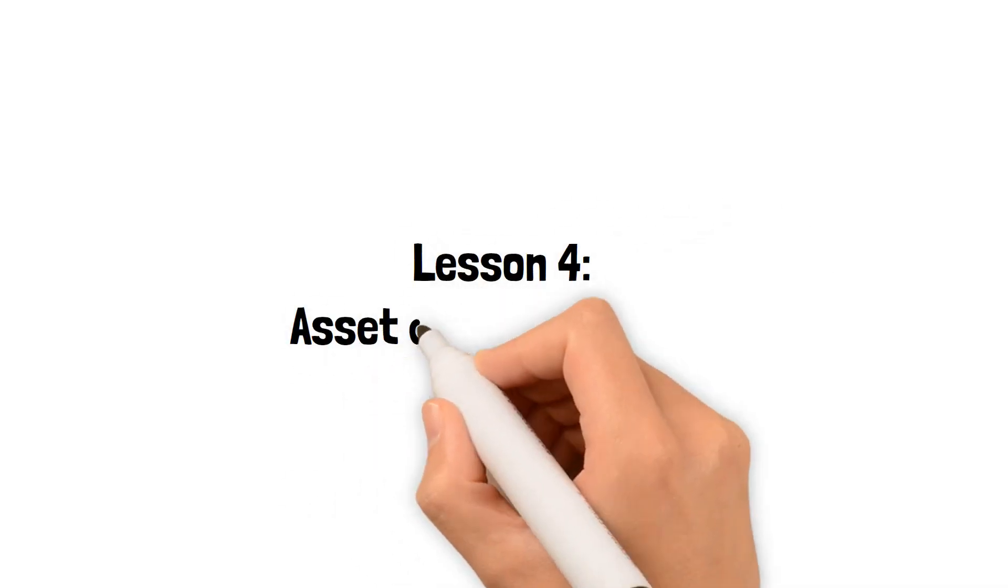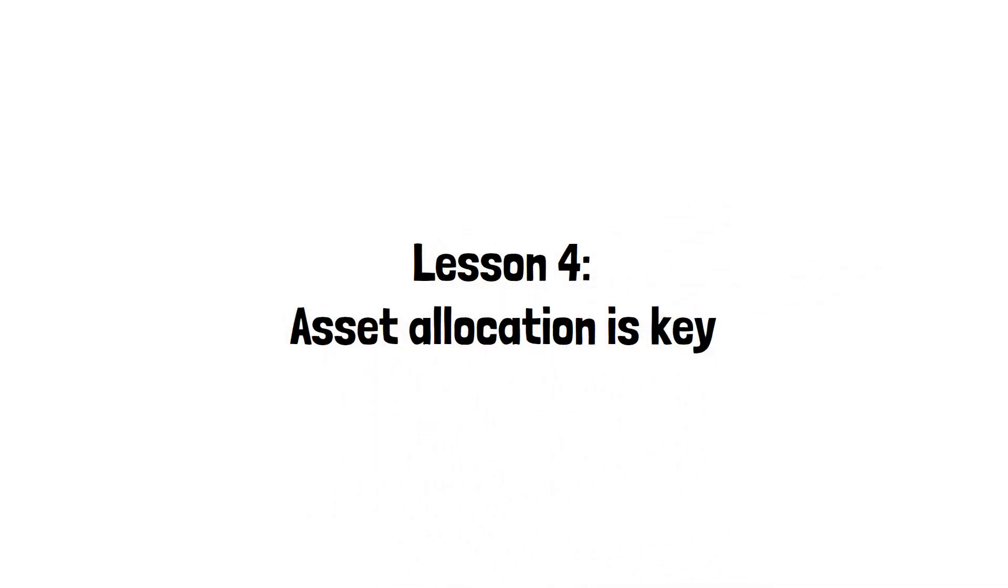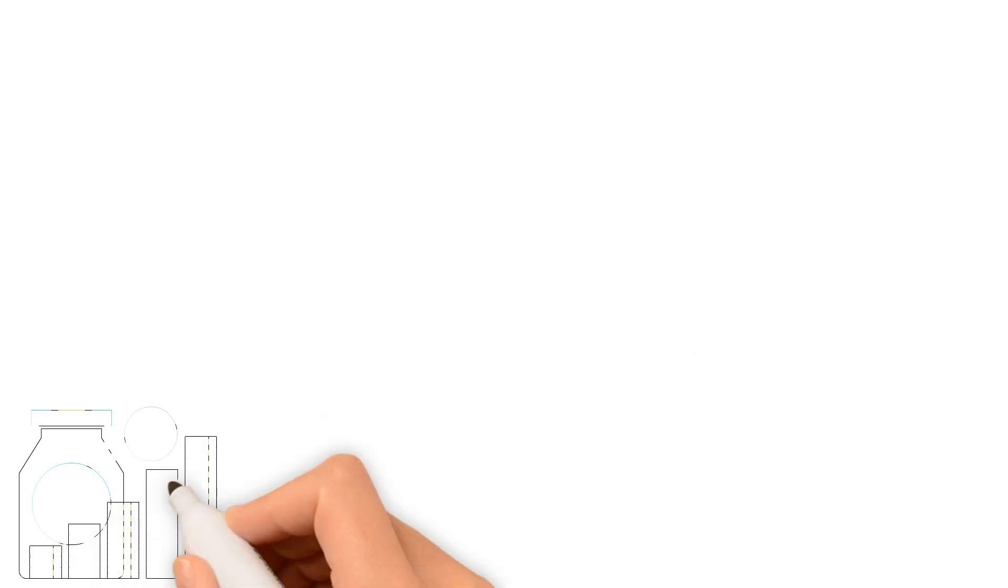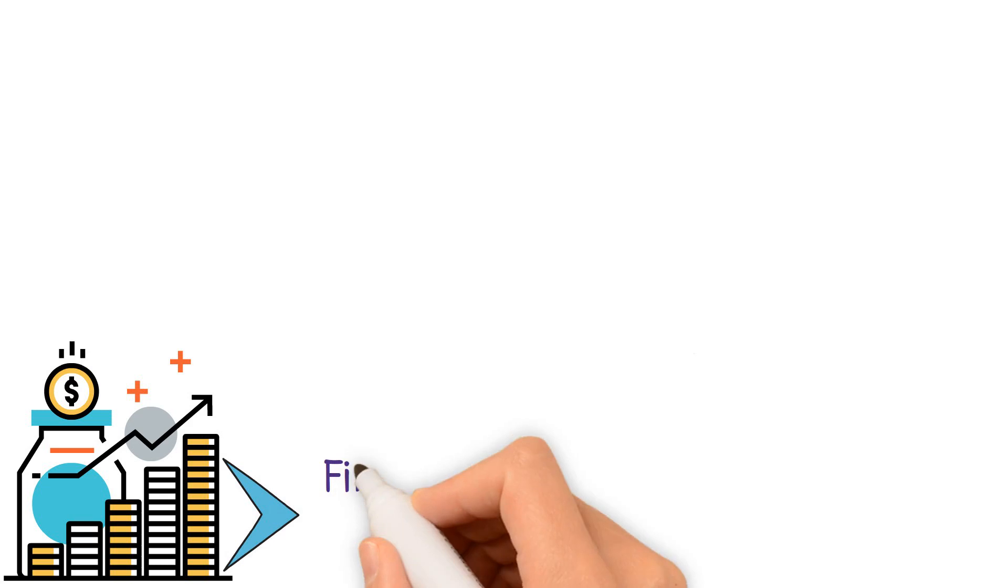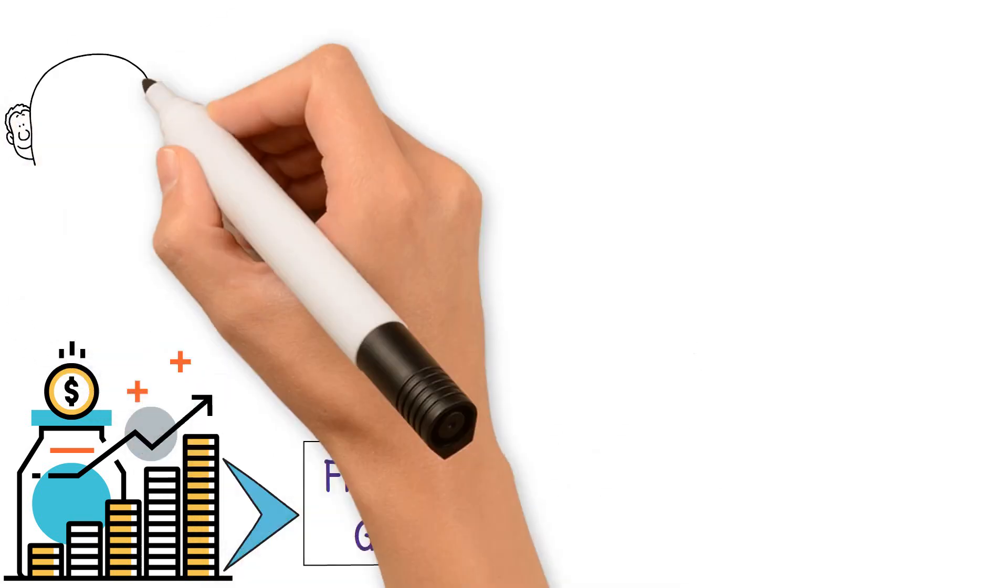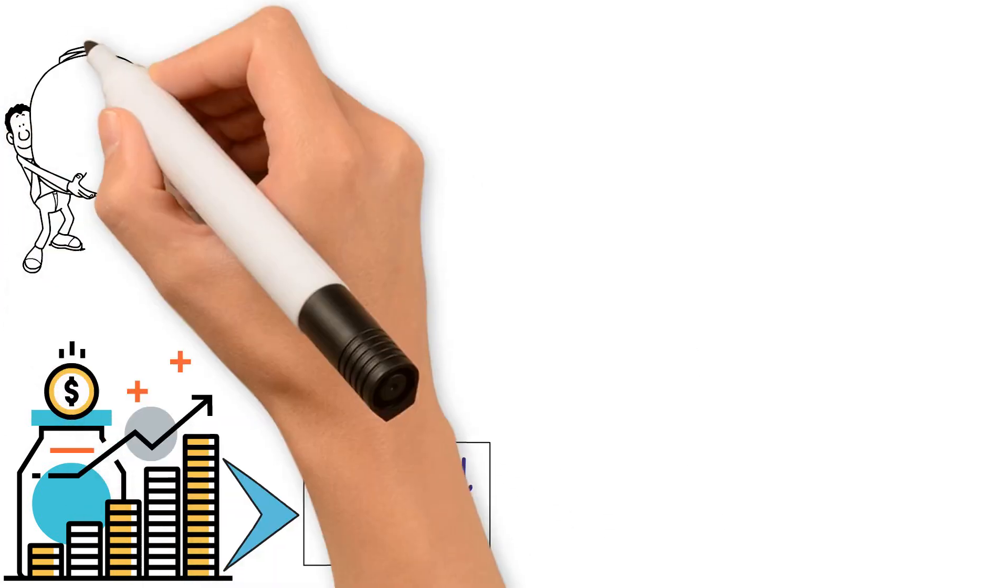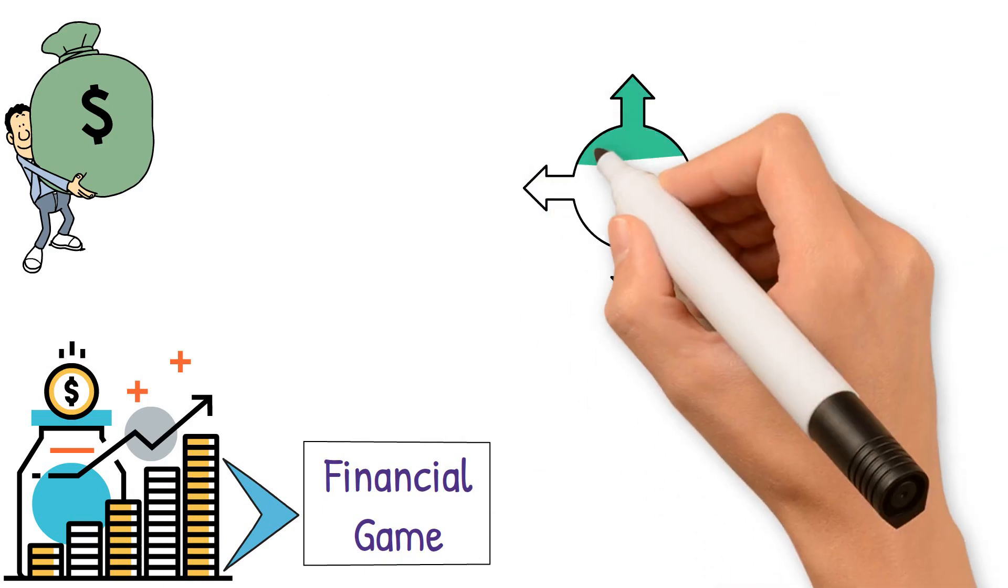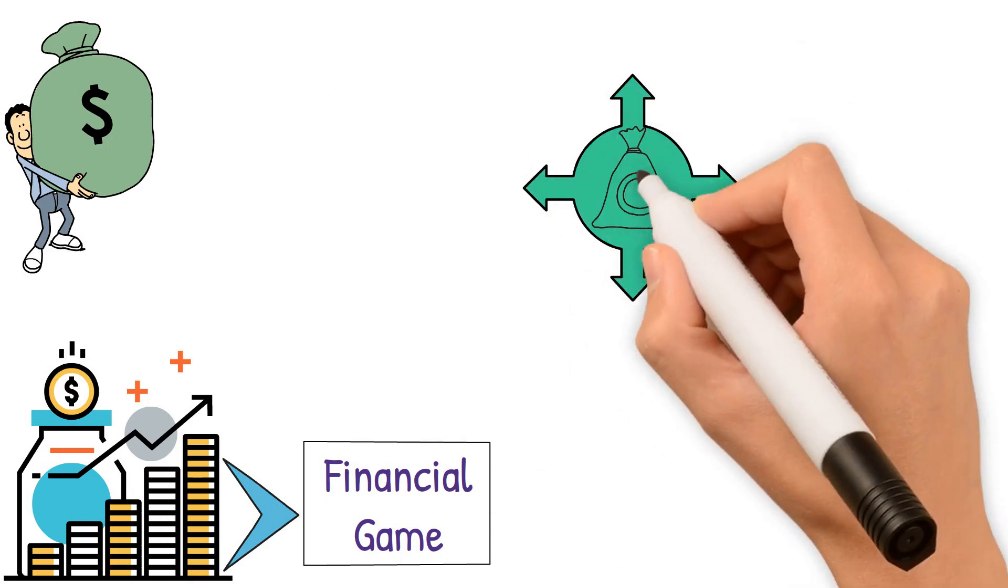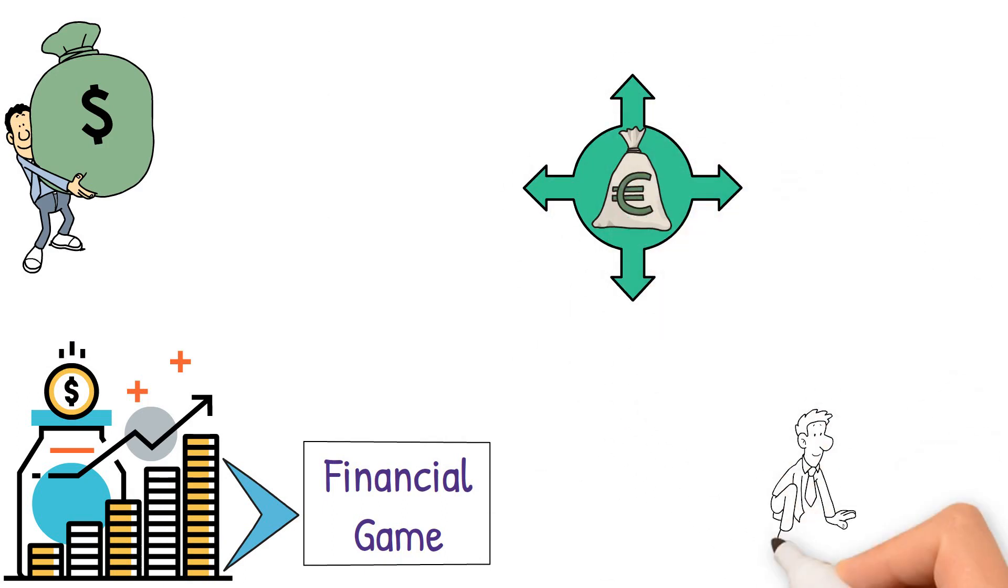Lesson 4: Asset allocation is key. Once you've opted for index funds and similar investment avenues that compound your money, you've essentially entered the financial game. The next crucial step is to determine your asset allocation. In fact, managing your asset distribution becomes pivotal as you accumulate wealth or work towards it as it ensures sustained growth.